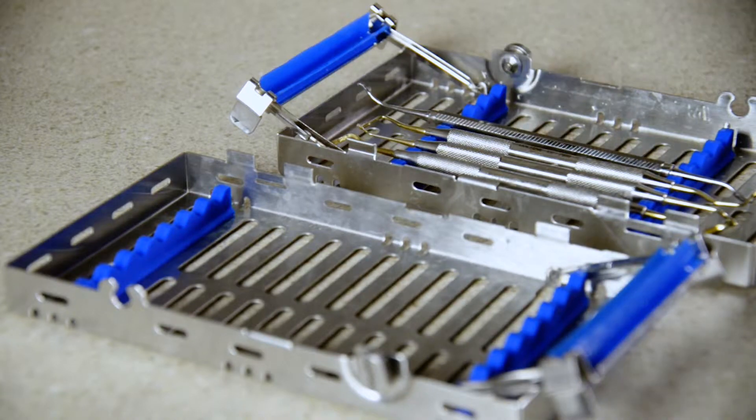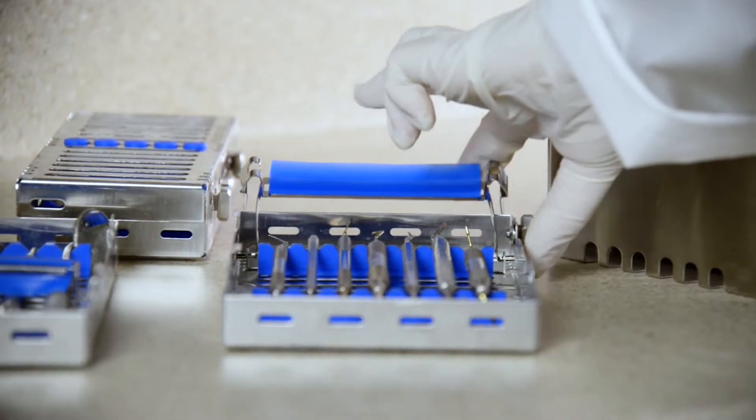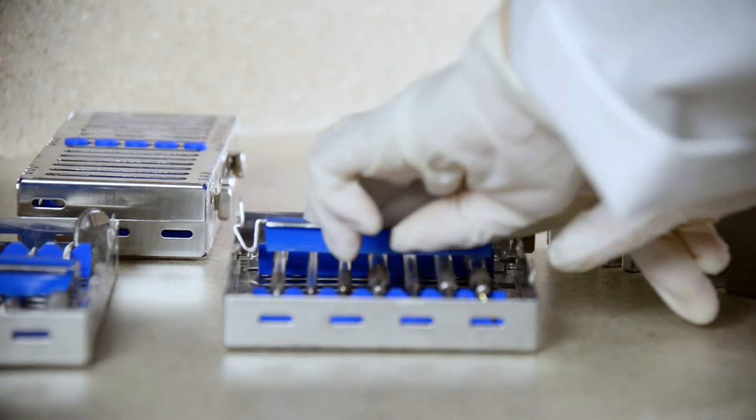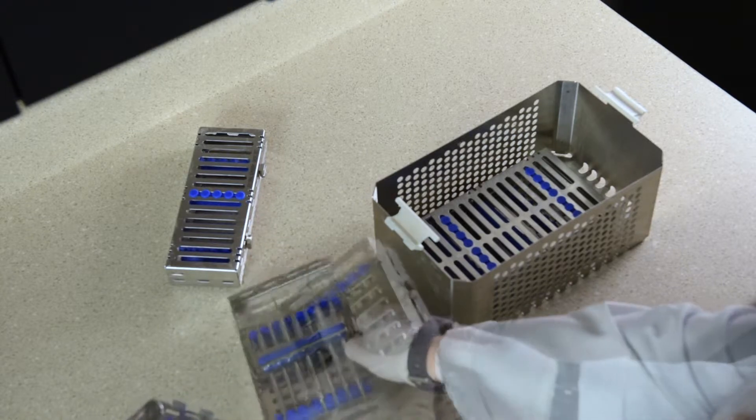A larger load will require a longer cleaning cycle. Placing instruments in the basket so that they overlap is not recommended, as open surface areas will be easier to clean. Leaving clear space between instruments in a basket should lead to a more effective cleaning cycle.